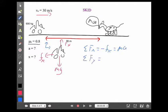In the y-direction, in the vertical, we have normal pointing positive, mg pointing negative. That equals zero, because the car is not moving up or down.